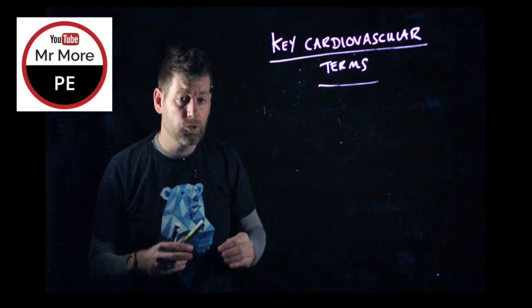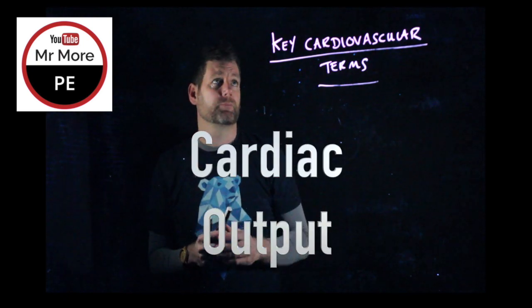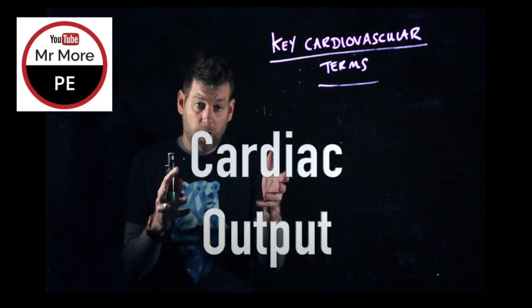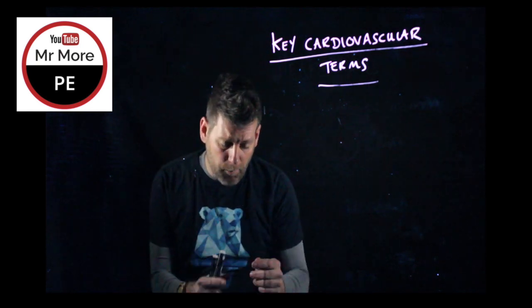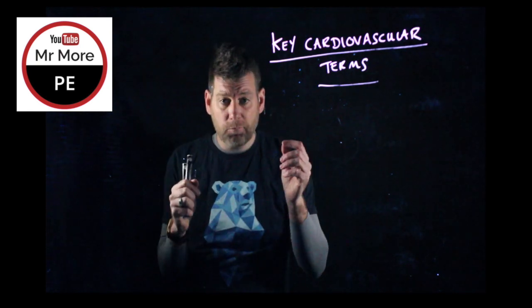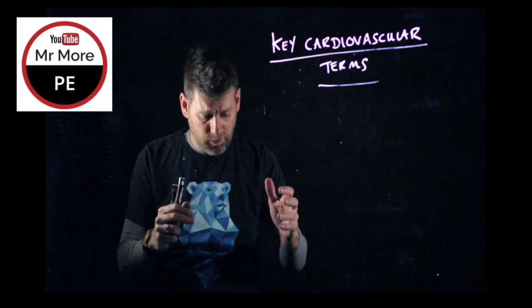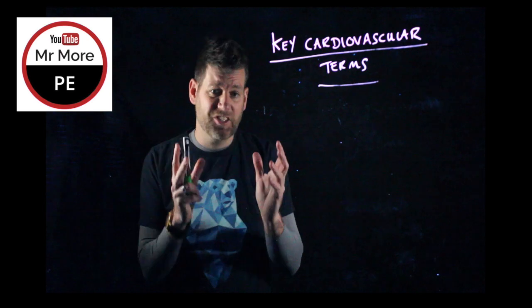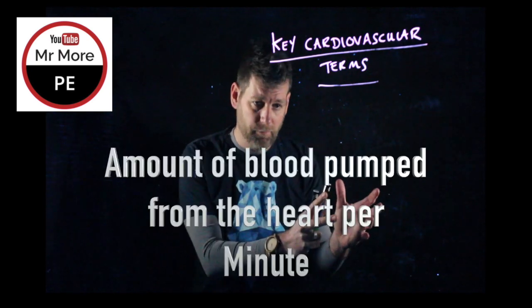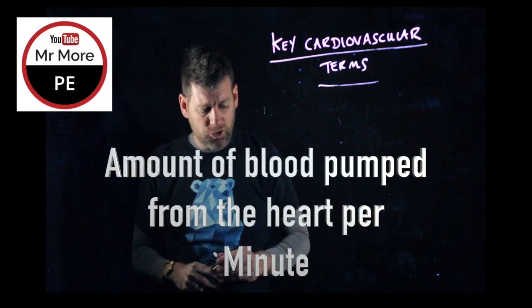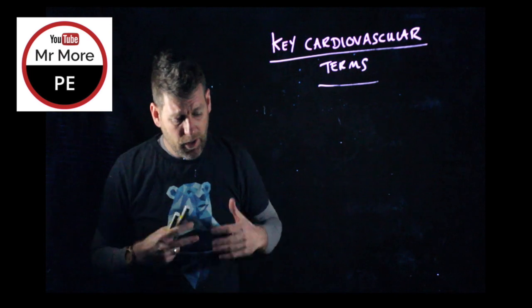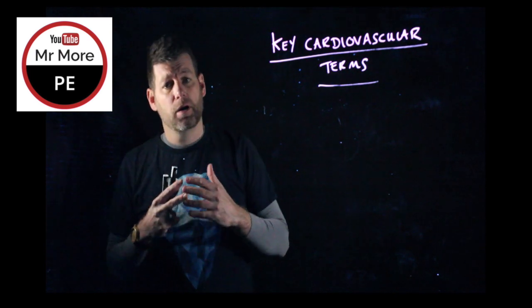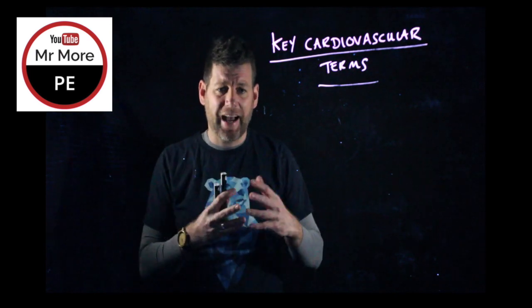So next up, we're going to talk about cardiac output. Cardiac output is the amount of blood pumped from the heart every single minute. So stroke volume is per beat, whereas cardiac output is per minute — it's that output.